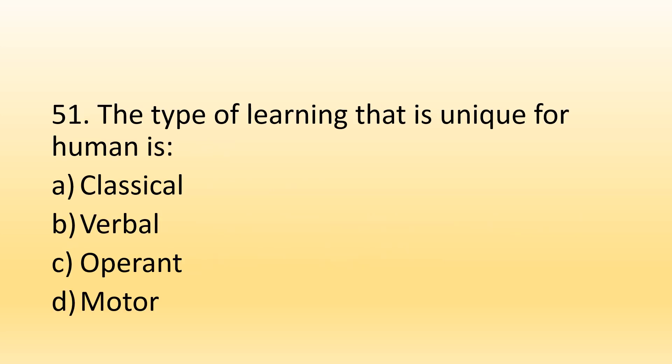Number 51. The type of learning that is unique to humans is: Option A, Classical; Option B, Verbal; Option C, Operant; Option D, Motive. The right option is Option B, Verbal Learning. Classical and operant conditioning are also present in animals, but verbal learning is unique to humans.